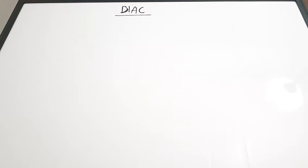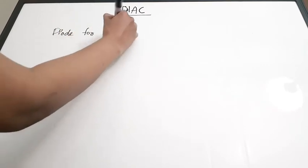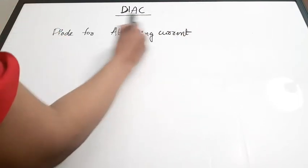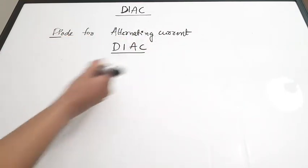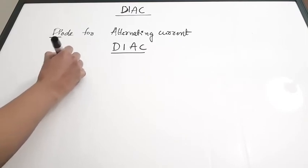In today's video we are going to discuss about DIAC, which is a very useful component for power electronics applications. We are going to discuss the symbol, the structure, the characteristics, and the most important points from the DIAC topic. DIAC is actually the abbreviation of Diode for Alternating Current — the 'di' from diode and 'AC' from alternating current gives us DIAC. This is how the name is derived.